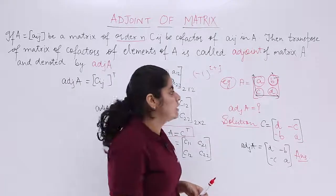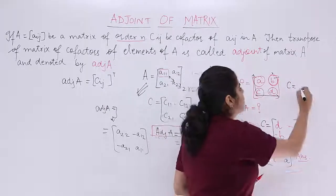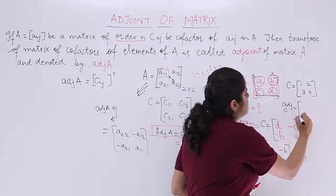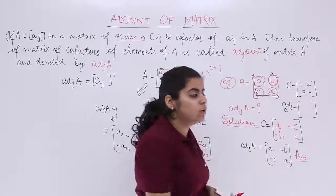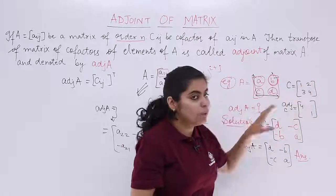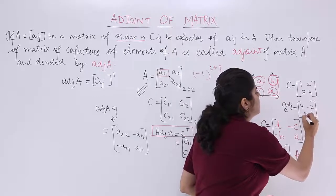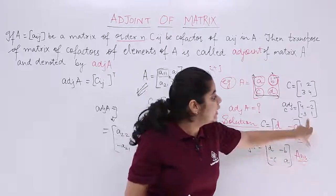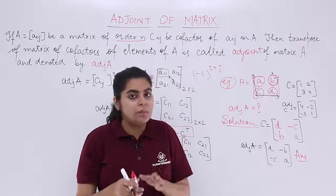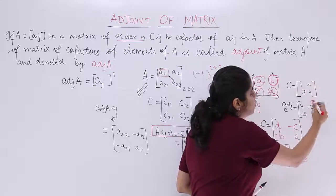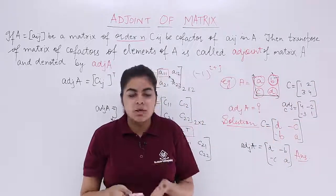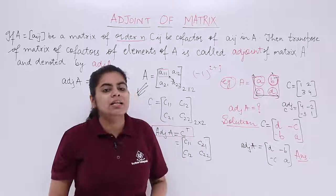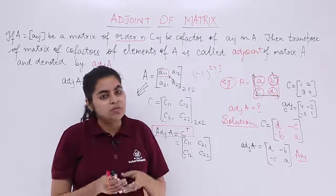One more example for the adjoint: the adjoint of matrix C given as [1, 2; 3, 4]. By the short trick: interchange 1 and 4, so 4 and 1 on the diagonal; then make 2 and 3 into minus 2 and minus 3. Even if you calculate using cofactors and transpose, the answer will be the same. But remember, this short trick applies only for a 2 by 2 matrix. For a 3 by 3 matrix, everything has to be calculated: first calculate the cofactors, then take the transpose to get the adjoint, which we will see in the next video.